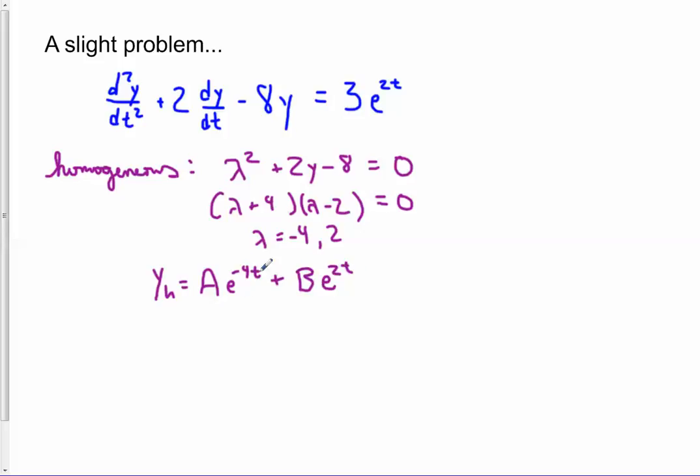And so our homogeneous solution would be a e to the negative 4t plus b e to the 2t. So e to the negative 4t solves the homogeneous, e to the 2t solves the homogeneous. And any multiples and any combinations of the two would solve the homogeneous. So that's the general solution to the homogeneous.